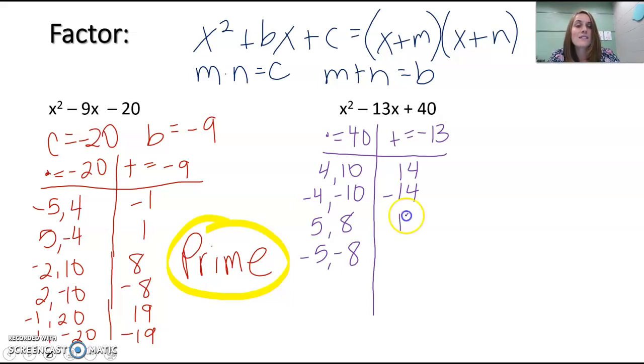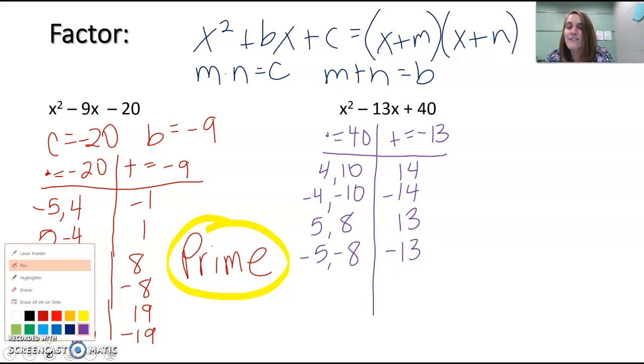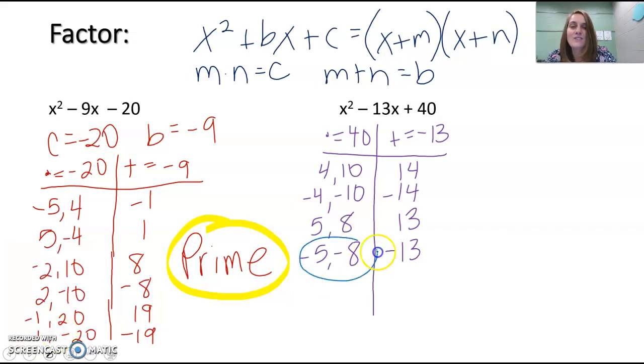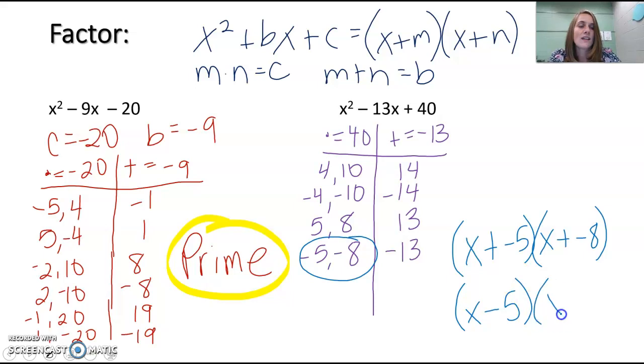5 plus 8 is 13, but remember we want -13, so we're going to use -5 and -8 as our numbers that go into our factors. So it would be (x + (-5))(x + (-8)), or we'd actually write that as (x - 5)(x - 8) if we want to simplify it.